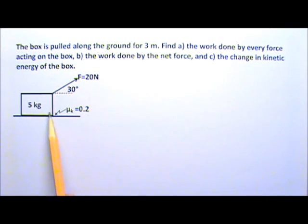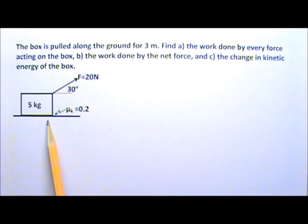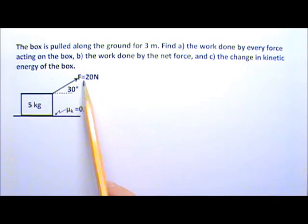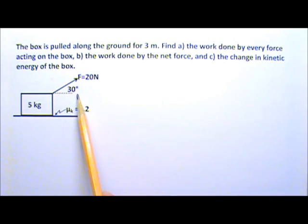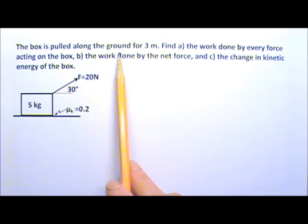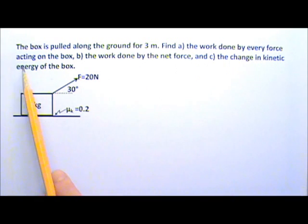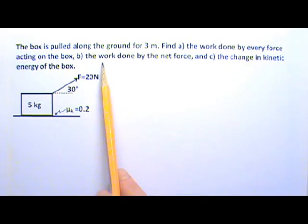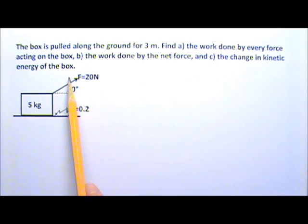In this problem we have a 5 kg box on the ground. The coefficient of kinetic friction, mu K, is 0.2 between the box and the ground. A 20 N slanted force pulls on the box at a 30 degree angle above the horizontal. The box is pulled along the ground for 3 meters. We want to find the work done by every force acting on the box, the work done by the net force, and the change in kinetic energy of the box.